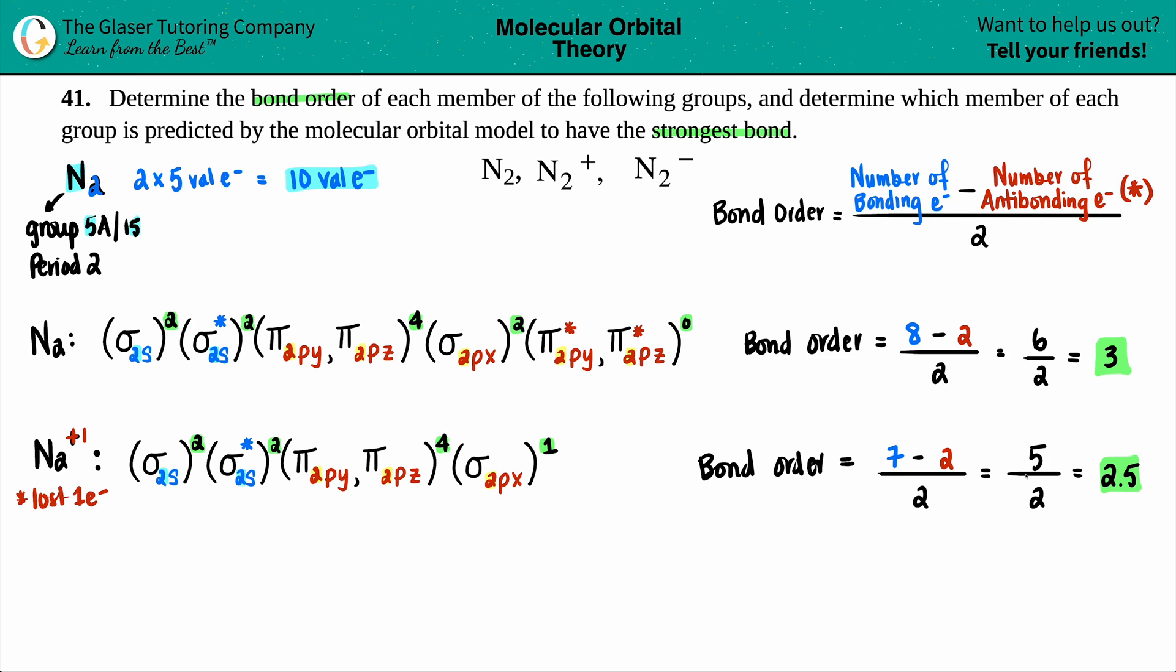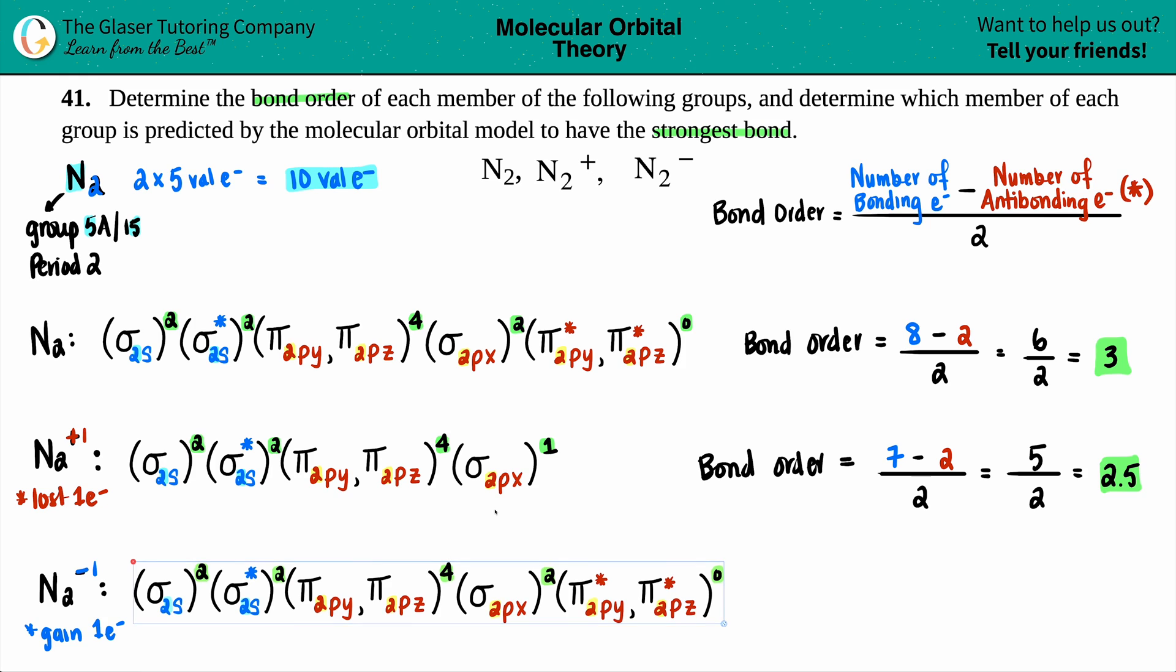Last bond order to figure out is N2 minus. The minus means negative one, which means you're now gaining one electron. Remember that you gain from your neutral molecule. I'm going to copy this. I need to gain an electron. I'm not going to gain it here because two is the max for this molecular orbital, so I go to the next one. This will be a one. That's how you gain that last electron.